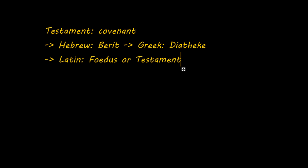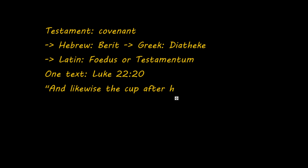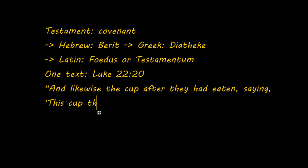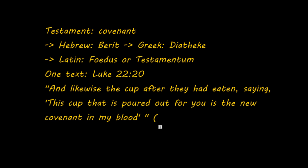And here you can see the word testament. The word testament is of course very important because we have the Old Testament and the New Testament. There are several texts that indicate that there is an Old Covenant and a New Covenant. But one of the most important ones, at least in the New Testament, is found in Luke 22, verse 20. I'm reading from the ESV, the English Standard Version: 'And likewise the cup, after they had eaten, saying' — and then Jesus is quoted — 'This cup that is poured out for you is the New Covenant in my blood.' And here you have the word covenant, which is translated as testament.